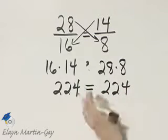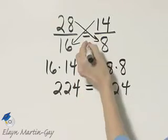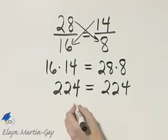So these two numbers are equal, which means these two are equal, which means that is a true proportion then.